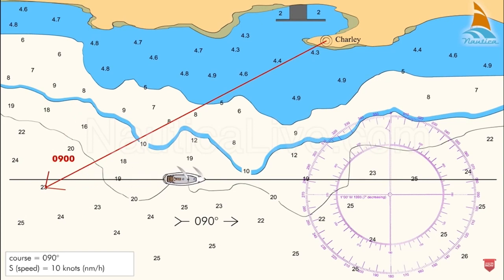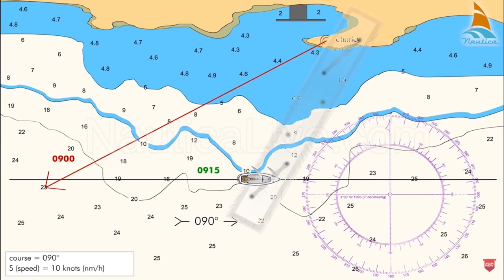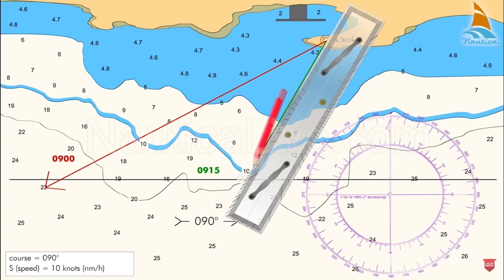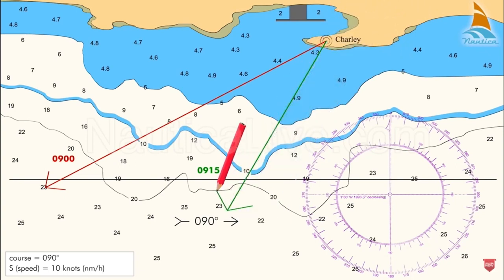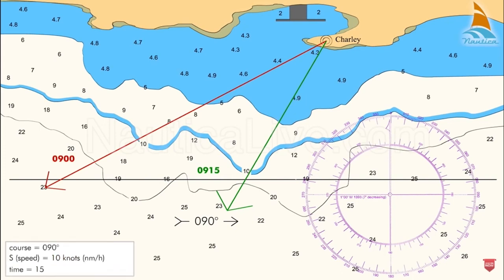After traveling 15 minutes, we sight another bearing from the Charlie tower. We double the first angle — so 30 doubled gives 60 degrees. We sight again at 90 degrees, and the second bearing from our position is transferred, giving us a 60-degree bearing.